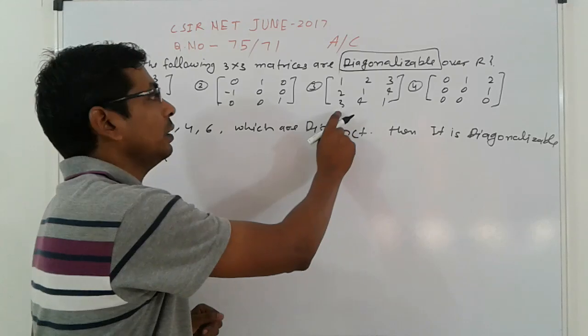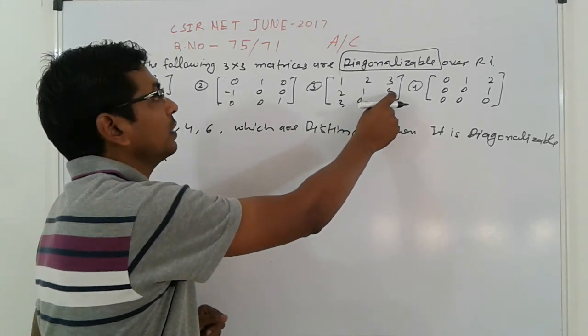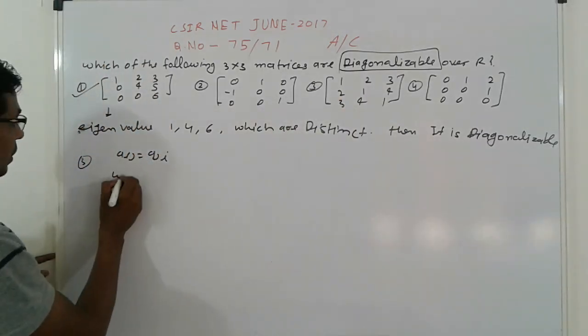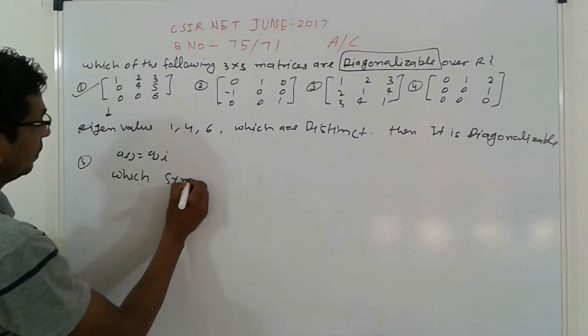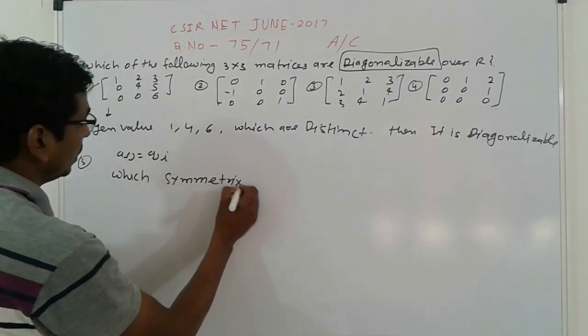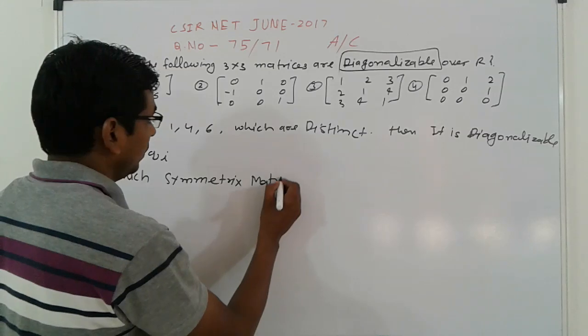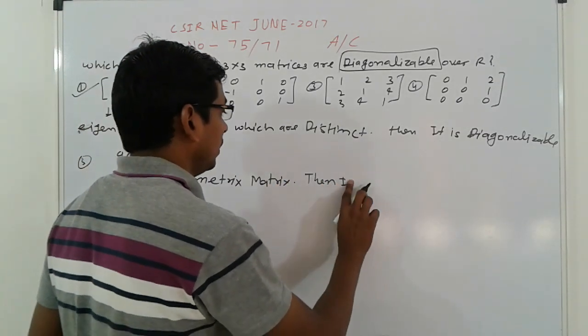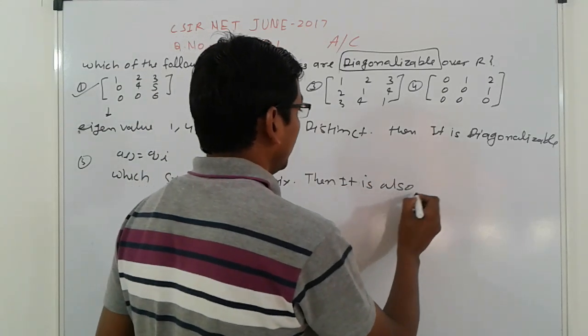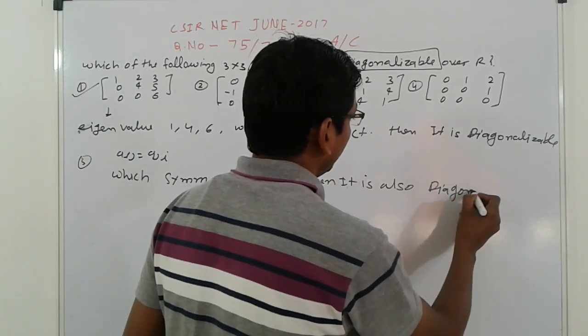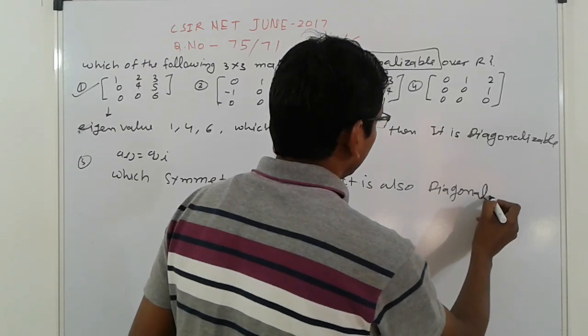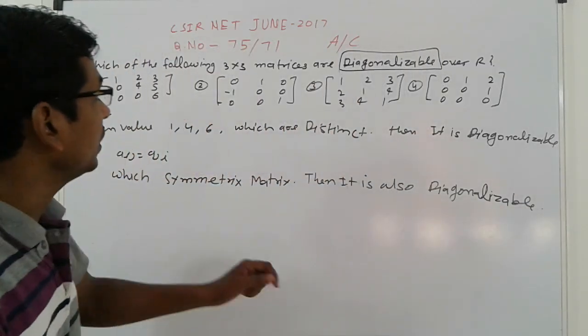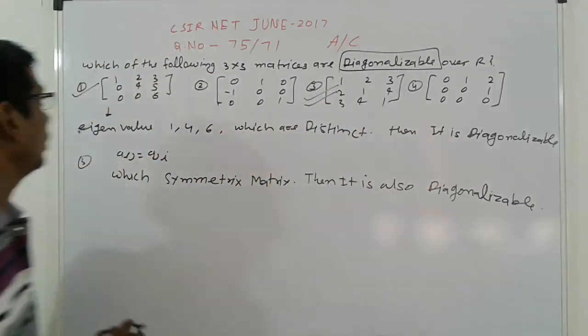There's a rule: one-two equals two-one, one-three equals three-one, and two-four equals two-three. That means it's a symmetric matrix. So then it is also diagonalizable, which means the third is also correct.